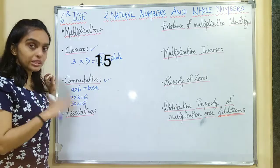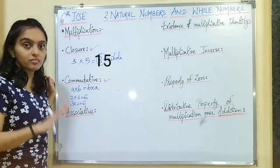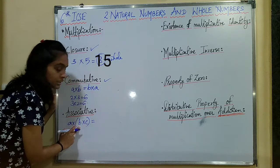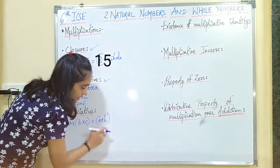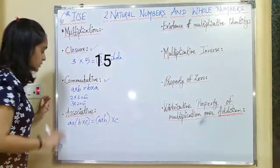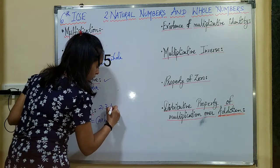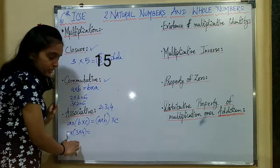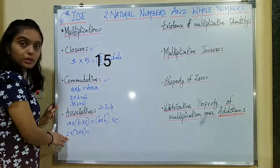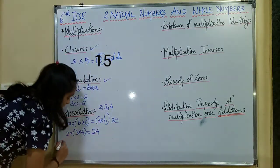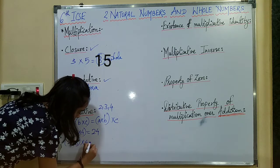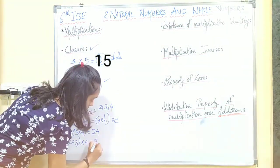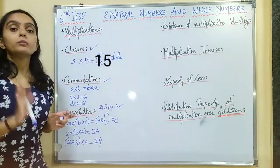Similarly, for associative property, multiplication of 3 numbers is the same even if their orders are changed. So a multiplied by (b multiplied by c) equals (a multiplied by b) multiplied by c. For example, with numbers 2, 3 and 4: for LHS, 3 multiplied by 4 is 12 and 12 multiplied by 2 is 24. For RHS, 2 multiplied by 3 is 6 and 6 multiplied by 4 is 24. So associative property holds for multiplication of whole numbers.